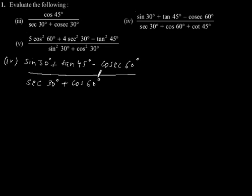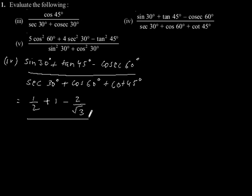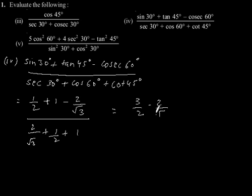Next part: evaluate sin 30° + tan 45° − cosec 60° divided by sec 30° + cos 60° + cot 45°. Putting in the values: sin 30° is 1/2, tan 45° is 1, cos 60° is 1/2; sec 30° is 2/√3, plus cos 60° is 1/2, plus cot 45° is 1. This gives (3/2 − 2/√3) divided by (3/2 + 2/√3).